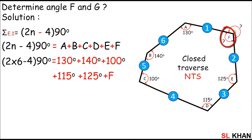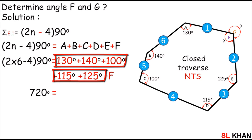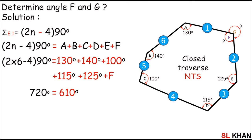Now we solve for F. The right-hand side of the equation must be 720 degrees, which means 2 times 6 equals 12, minus 4 is 8, times 90 is 720 degrees. The summation of the known angles — 130, 140, 100, 115, and 125 — is 610 degrees, plus F.